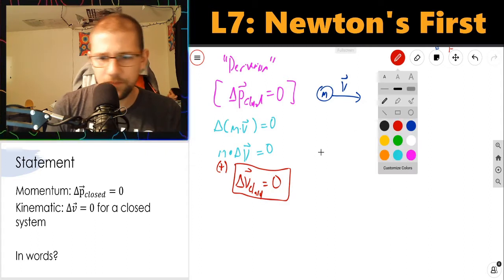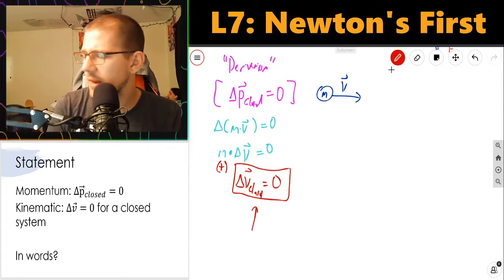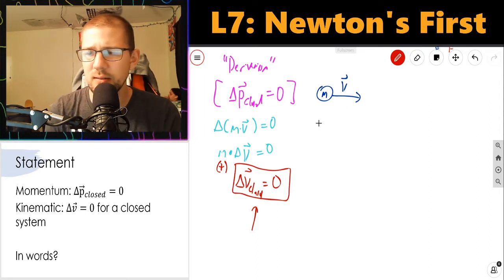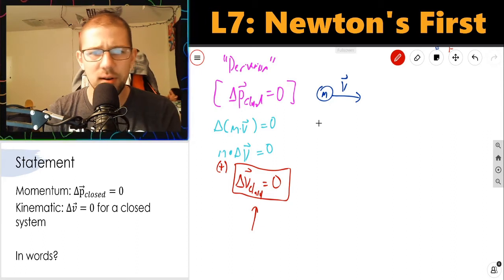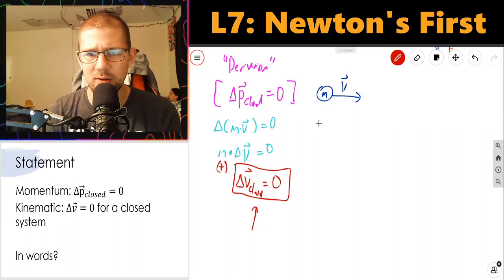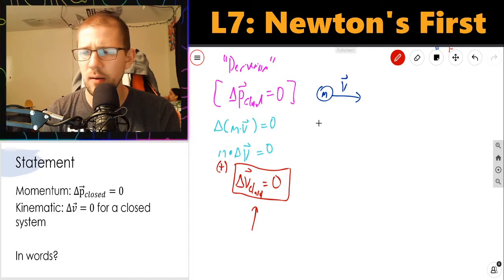Now, in words, what does this mean? This tells me that an object in motion tends to stay in motion at the same constant velocity. An object at rest tends to stay at rest at zero velocity. Equivalent statements.